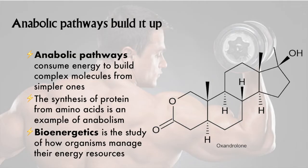We saw oxandrolone in unit 1 — do you recognize the shape? And with the other material on this slide, perhaps the background image also makes more sense. Oxandrolone is one of many anabolic steroids, drugs taken by athletes to accelerate the process of building muscle mass. While catabolism and anabolism are both cellular processes, the former releases energy and the latter consumes energy.